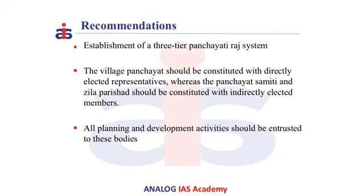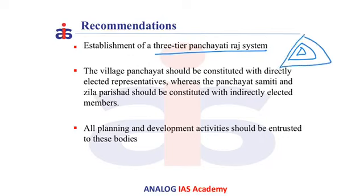Let us look into some of the recommendations given by the Balwantrai Mehta Committee. It recommended the establishment of a three-tier Panchayati Raj system — at the village level, the intermediate level, and the district level. The village level is called the Panchayat, the intermediate level is called the Panchayat Samiti or Mandal Parishat, and the district level is called the Zilla Parishat or district Panchayat. Village Panchayats should be constituted with directly elected representatives, whereas the Panchayat Samiti and Zilla Parishat should be constituted with indirectly elected members.